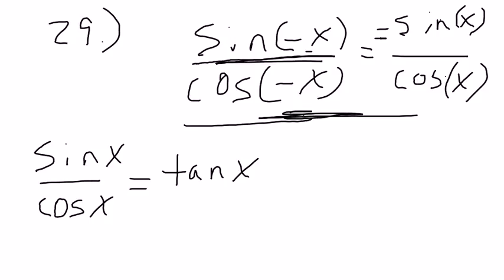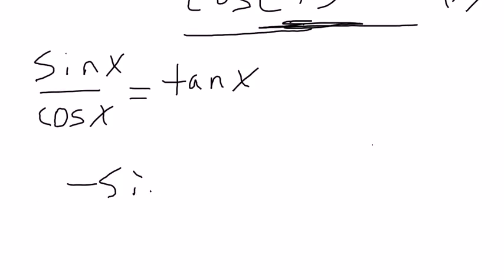So the only difference here is there's a negative sign up there. Okay, so if sine over cosine is tangent, negative sine over cosine must be negative tangent.